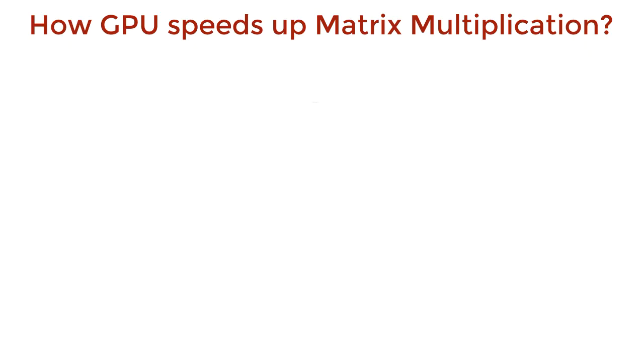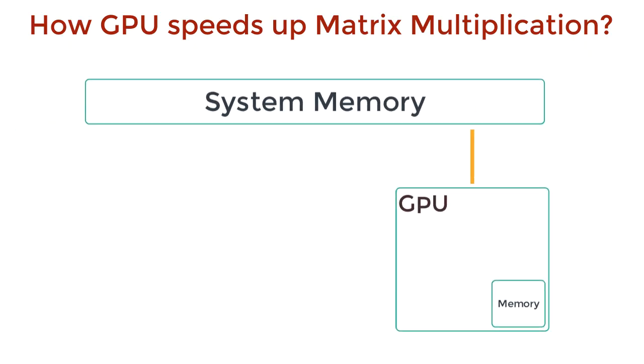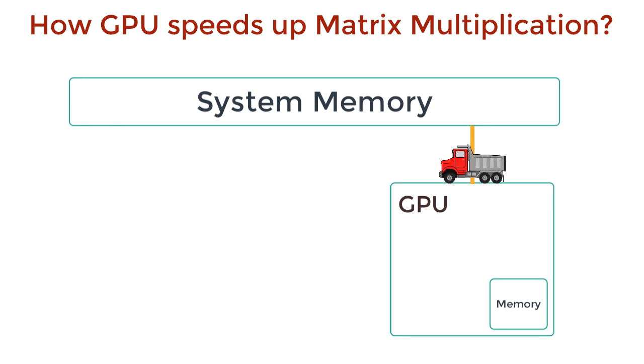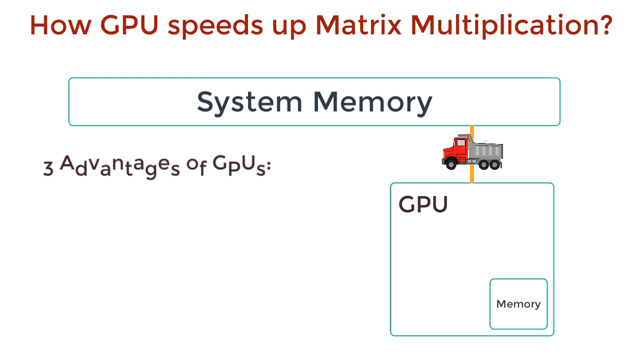So how exactly does a GPU speed up matrix multiplication? On the hardware side, GPUs have three main advantages over CPUs.